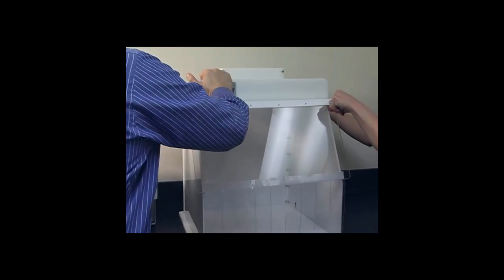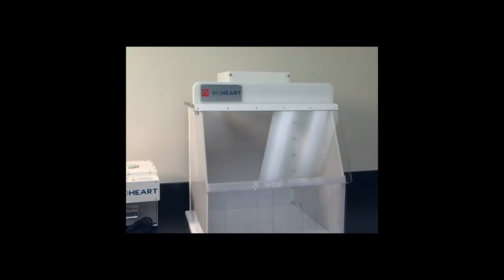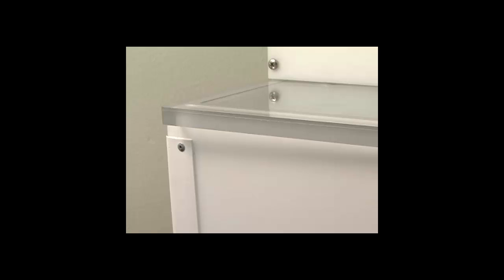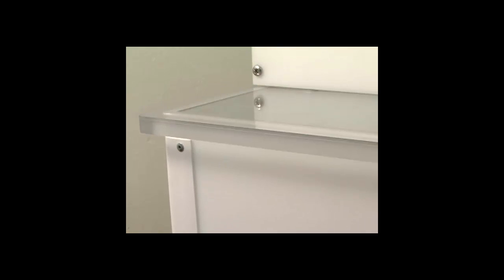After you have completed screwing in the support bar and filter box, pick up the top and front panel of the hood and place on the side panels. It is best done using two people. Please note, this piece needs to be seated properly into the side and back panels.